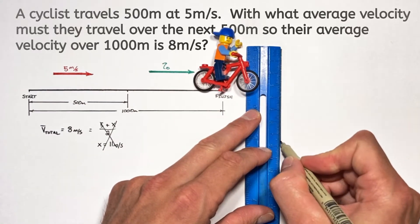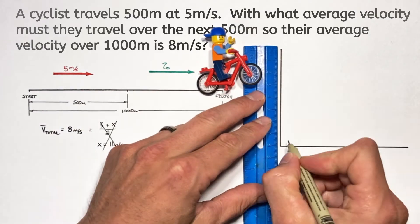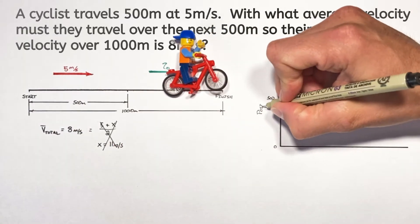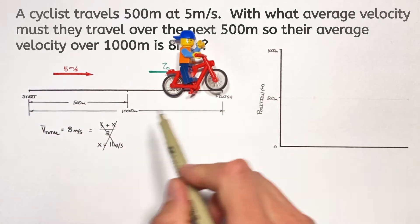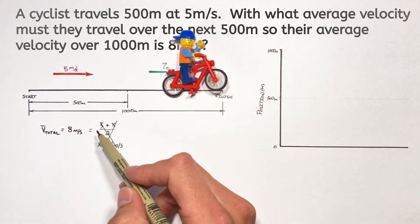And to understand why the solution is wrong, let me show you a graph of the position versus time of our little guy on a bicycle. You see we want this little guy to cover 1000 meters with an average velocity of 8 meters per second.